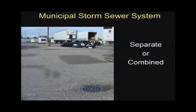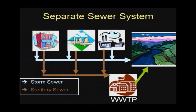At many facilities, stormwater is discharged from the facility into a municipal storm sewer system. It is important to understand whether the municipal sewers are separate or combined. In a separate sewer system, stormwater is kept separate from sanitary sewage and discharges directly into a surface water body. The sanitary sewage, which also may contain industrial wastewater, is directed to the local wastewater treatment plant where it is treated and then discharged.